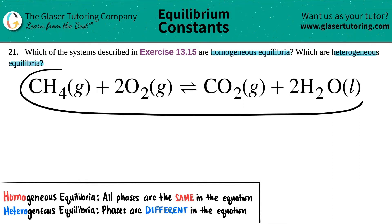Okay, so I pulled up one of the balanced equations in that exercise. In this case, we have to find out if CH4 gas plus 2O2 gas, which comes to equilibrium with CO2 gas plus 2H2O liquid, if this is either homogeneous equilibria or heterogeneous equilibrium.